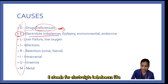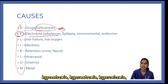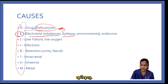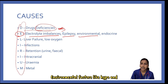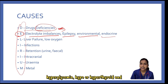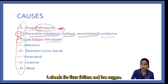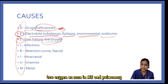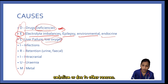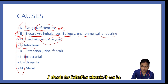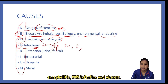E stands for electrolyte imbalances like hyponatremia and hypocalcemia, epilepsy, environmental factors like hypo- and hyperthermia, and endocrine causes due to hypo- or hyperglycemia, hypo- or hyperthyroidism, and adrenal insufficiency. L stands for liver failure and low oxygen, as seen in MI and pulmonary embolism or other reasons. I stands for infection, including sepsis, meningitis, encephalitis, CNS infection, and abscess.